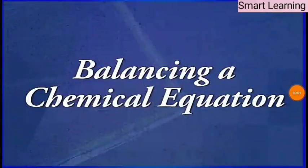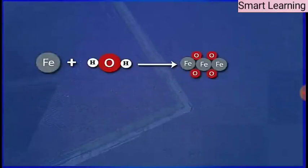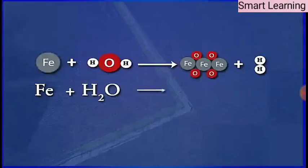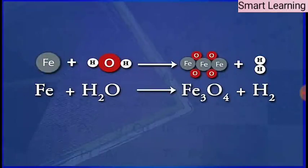Let us now learn to balance a chemical equation step by step. Let us try out with this example: Fe + H2O → Fe3O4 + H2. Is this chemical equation balanced? Come on, let's find out.